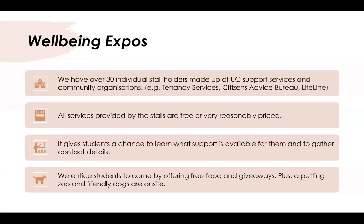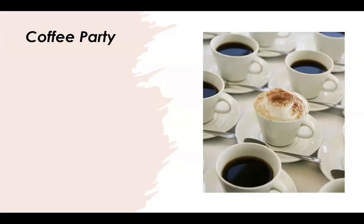Types of free food we provide include cakes, slices, and cookies with gluten-free, dairy-free, and vegan options, free drinks, and a free barbecue with sausages and veggie patties. Examples of giveaways are towels and caps for the Summer Starter Expo, and towels, beanies, scarves, and soaps for the Winter Wellness Expo. We also give out bamboo toothbrushes and toothpaste.